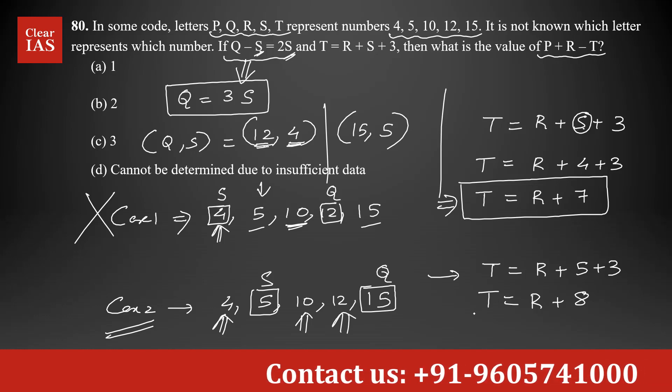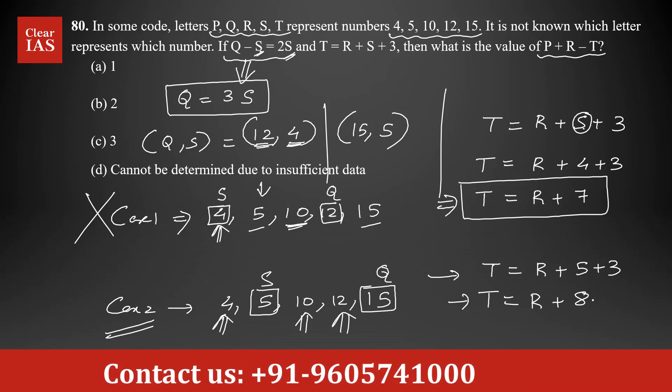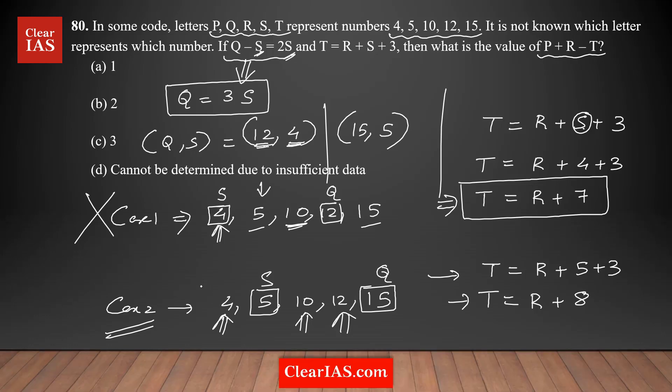So we have three numbers left: 4, 10, and 12. In these three numbers left, I need to find out which pair will satisfy this condition. You are adding 8 to one of the numbers, you should get the other number. 4 if you add 8, you are getting 12. That's the only pair possible. 10 plus 8 is 18 which is way beyond. 12 plus 8 is also 20 which is way beyond. So the only possible option here is R is equal to 4. 4 plus 8 is 12 which is value of T. This is the value of R and 12 is the value of T. So that means the only one left is P has to be 10.